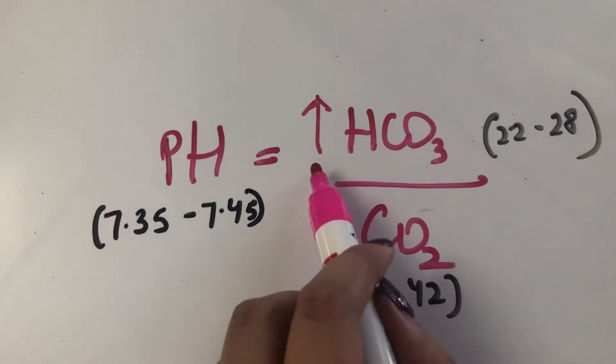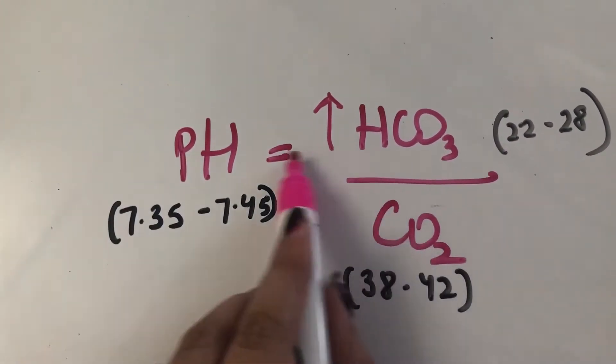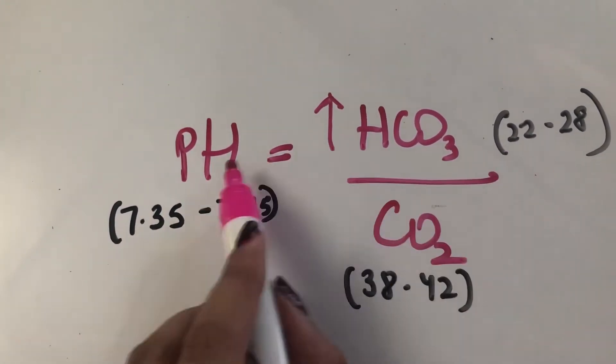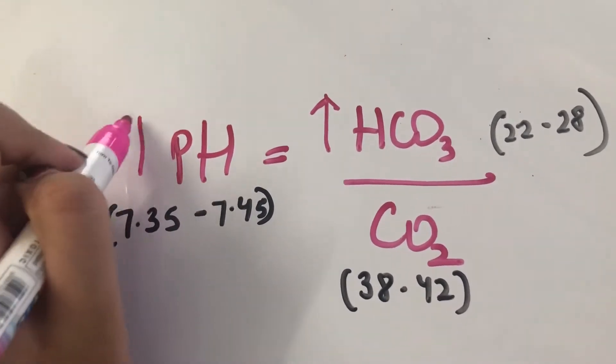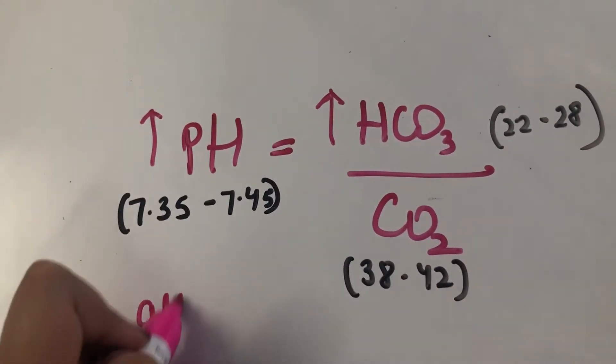So your HCO3 levels will probably go up like 32, 34, something like that. So if that happens, what happens to your pH? Directly. So pH goes up too. So in vomiting, what happens is we get alkalosis.